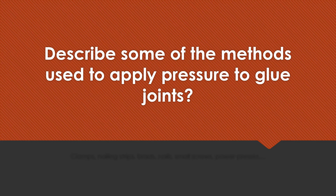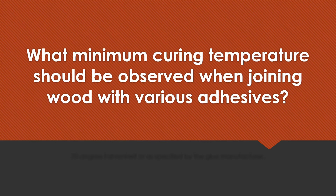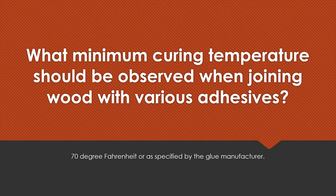Describe some of the methods used to apply pressure to glue joints. Clamps, nailing strips, brads, nails, small screws, power presses, etc. What minimum curing temperature should be observed when joining wood with various adhesives? 70 degrees Fahrenheit or as specified by the glue manufacturer.